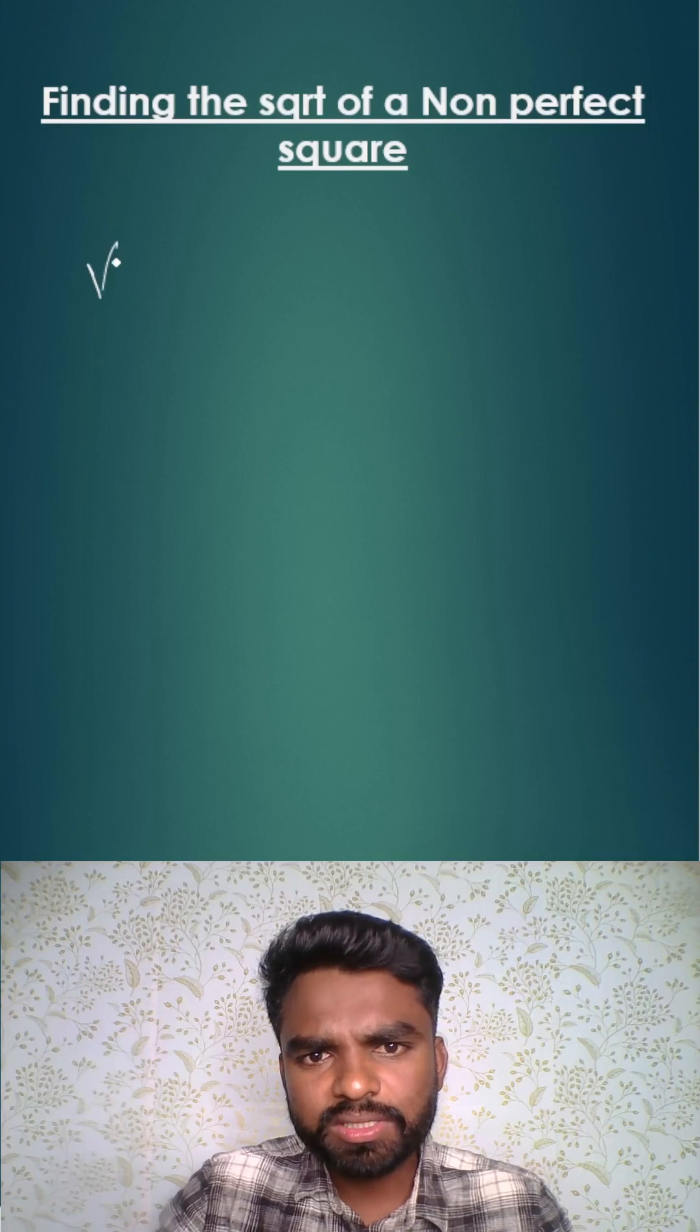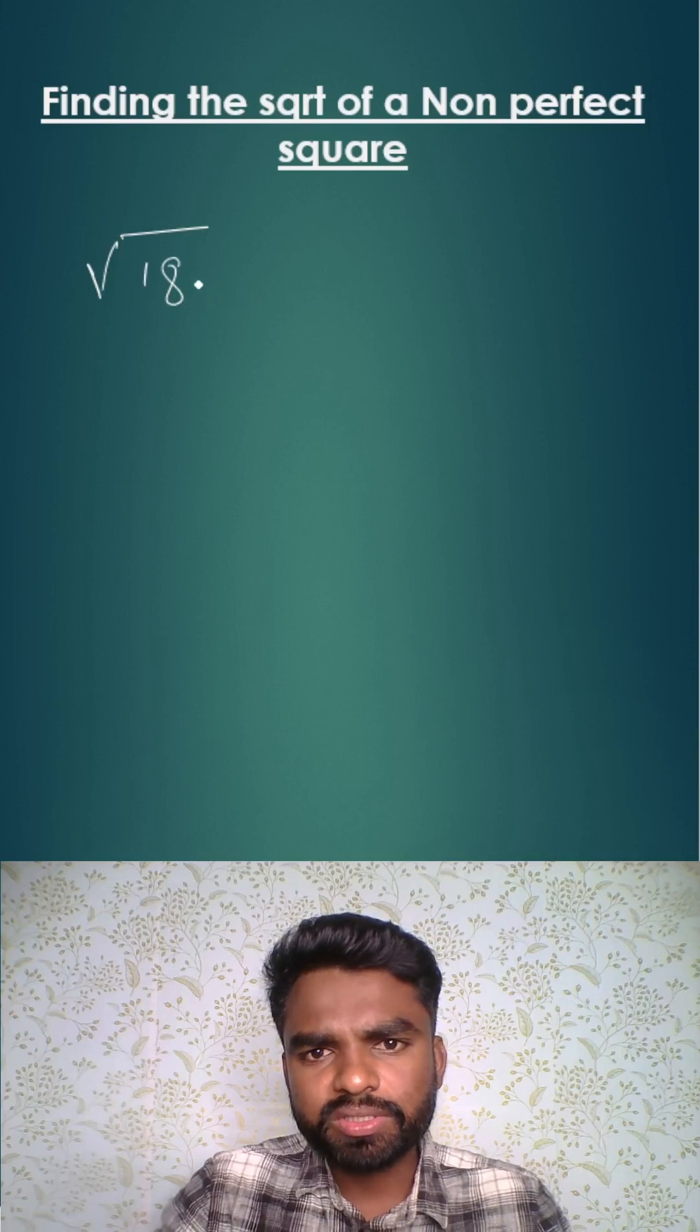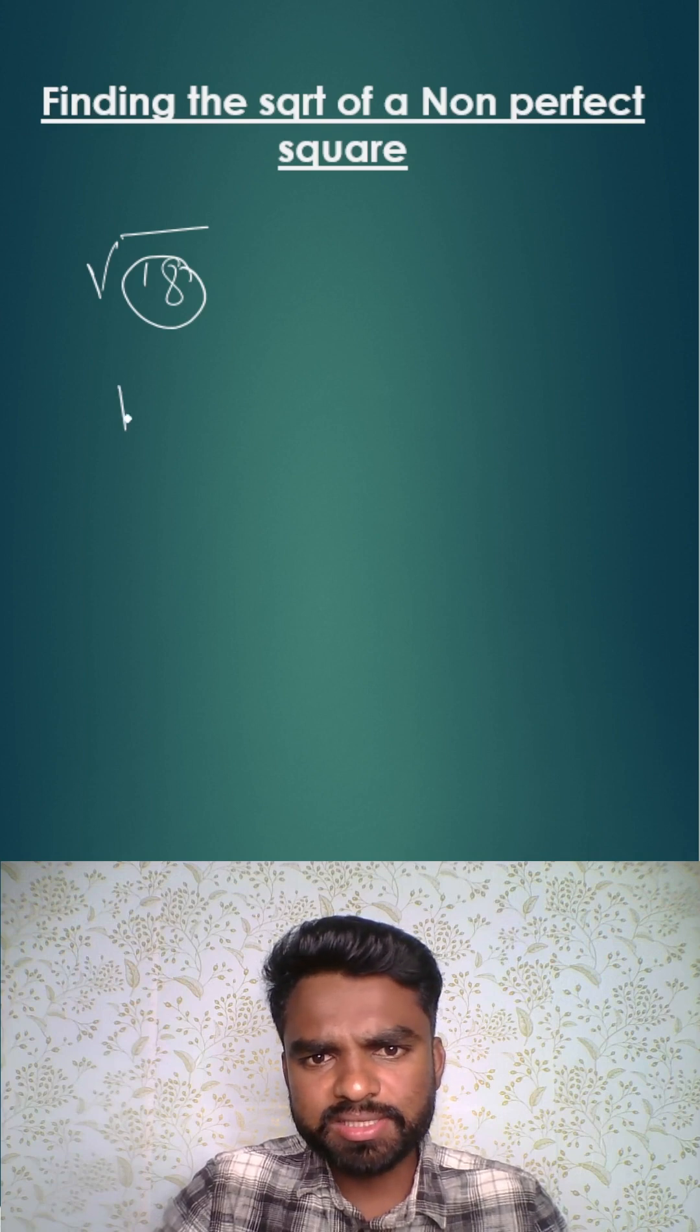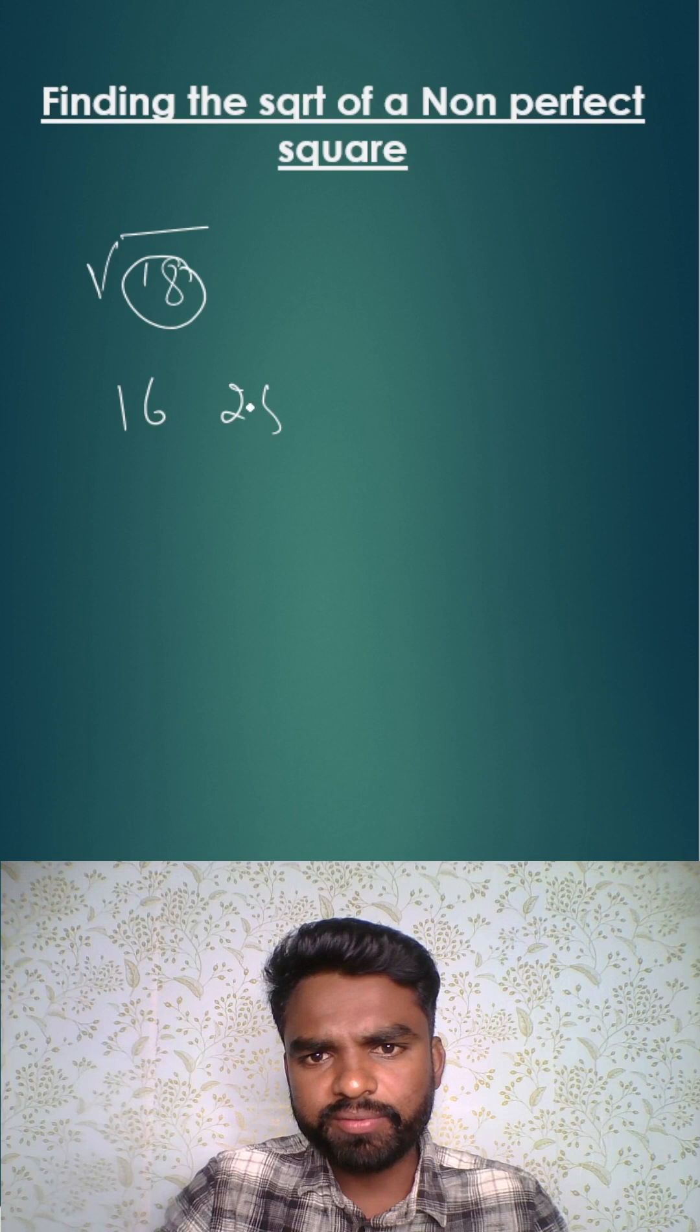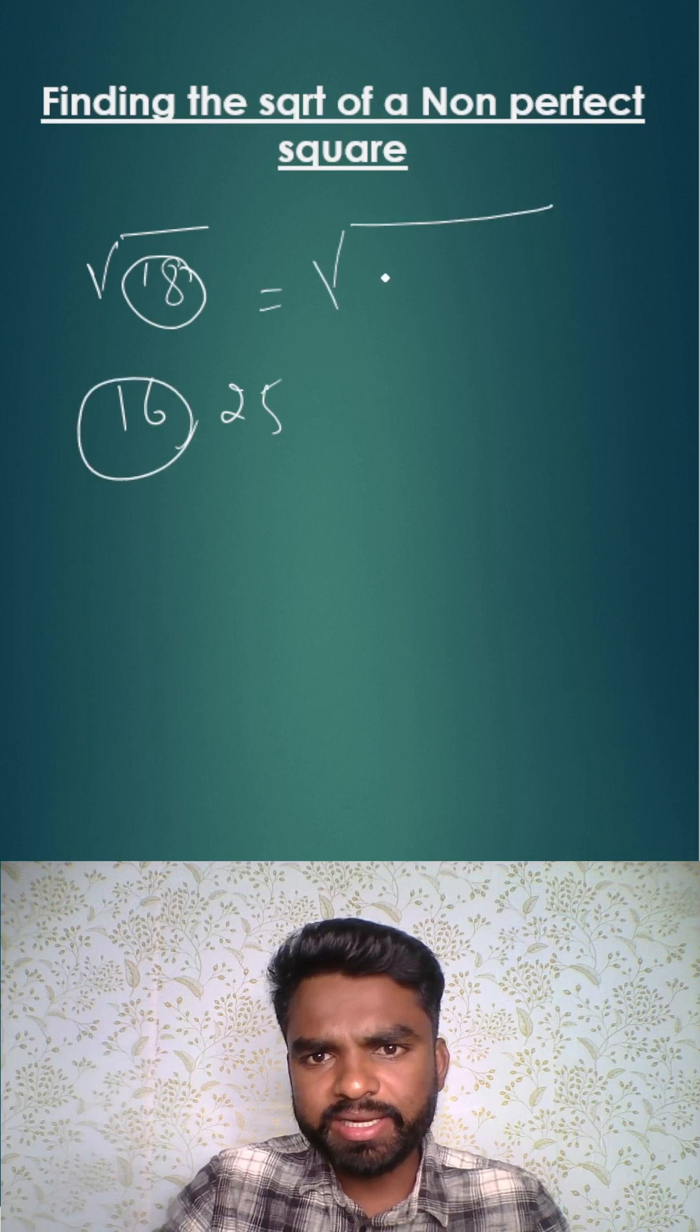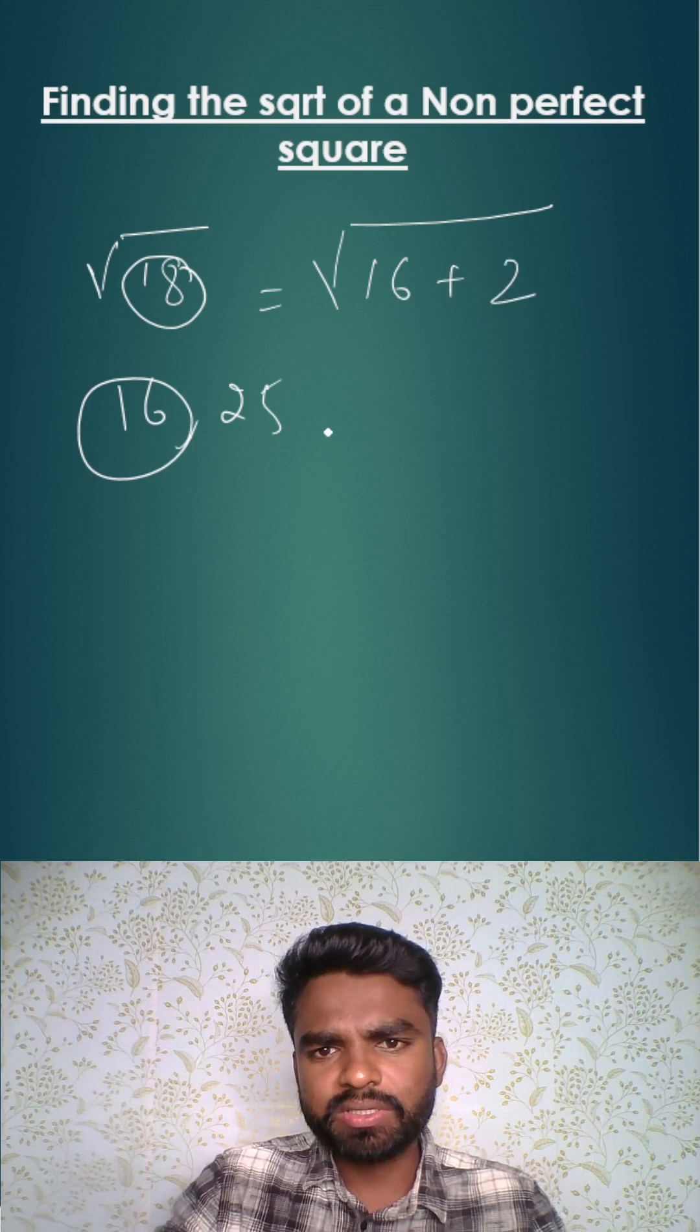Let's find out the square root of 18. In the first step you need to find a perfect square which is closest to 18. In this case it's either 16 or 25. I'll be taking 16 here. So I'll be writing 18 as 16 plus 2.